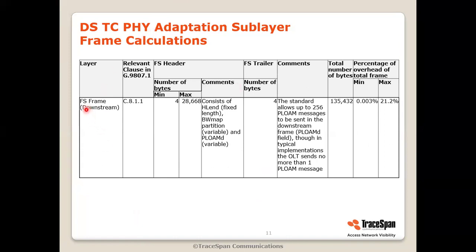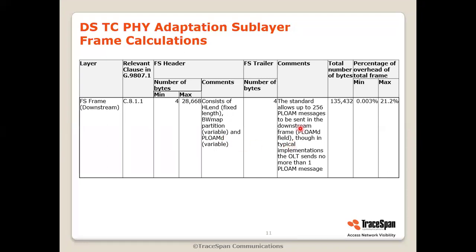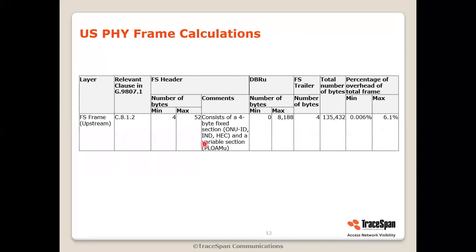The FS frame in the downstream has additional overhead, and this overhead can vary between a very small number up to a little bit more than 21%, depending on some factors — for example, the number of PLOAM messages in the downstream and the number of BWMAP allocations. In the upstream PHY, the overhead can again be a very small number up to about 6%, because of some overheads, and again depending on various parameters.